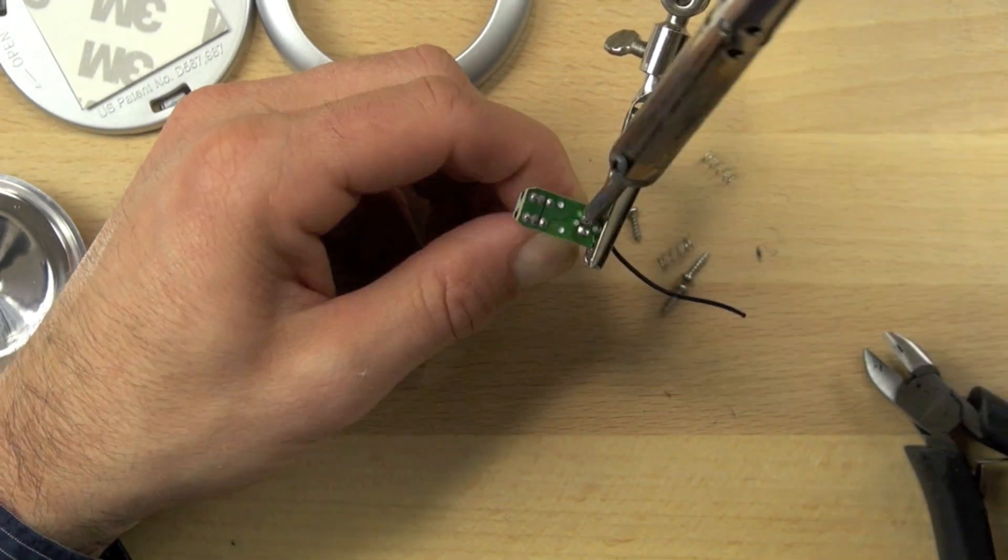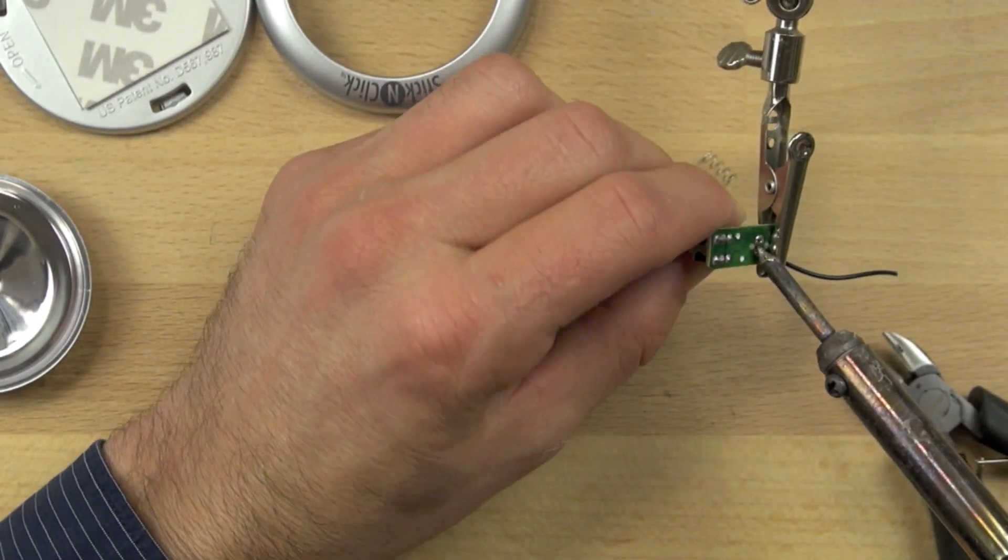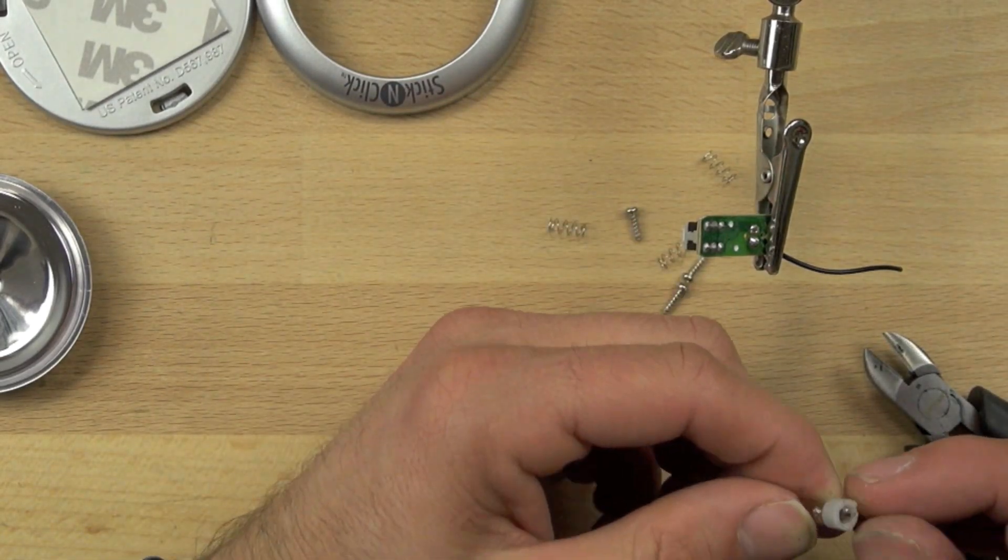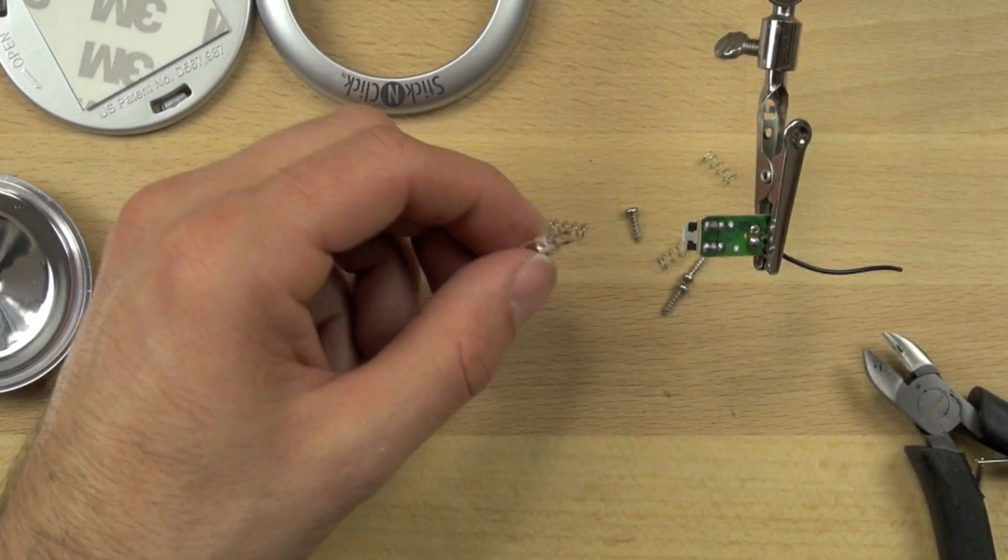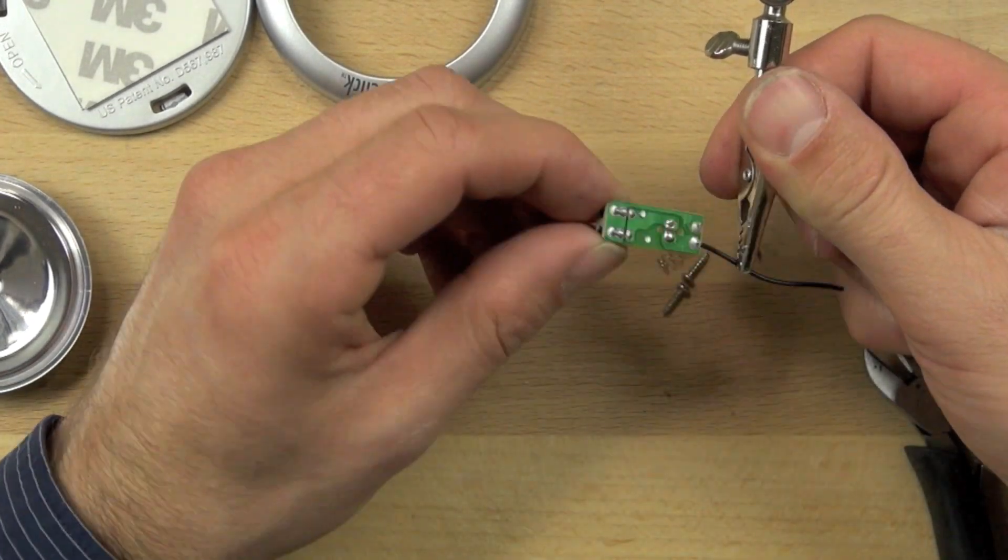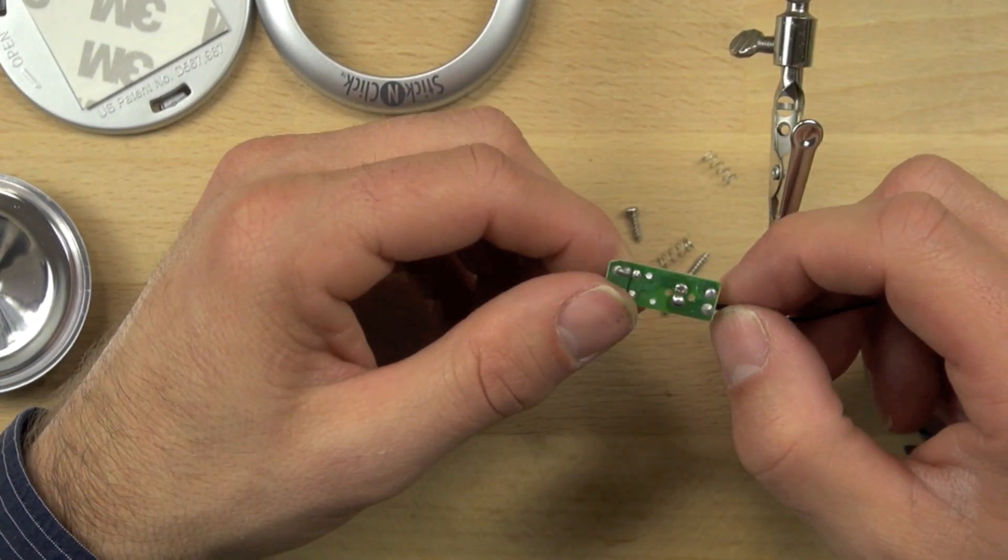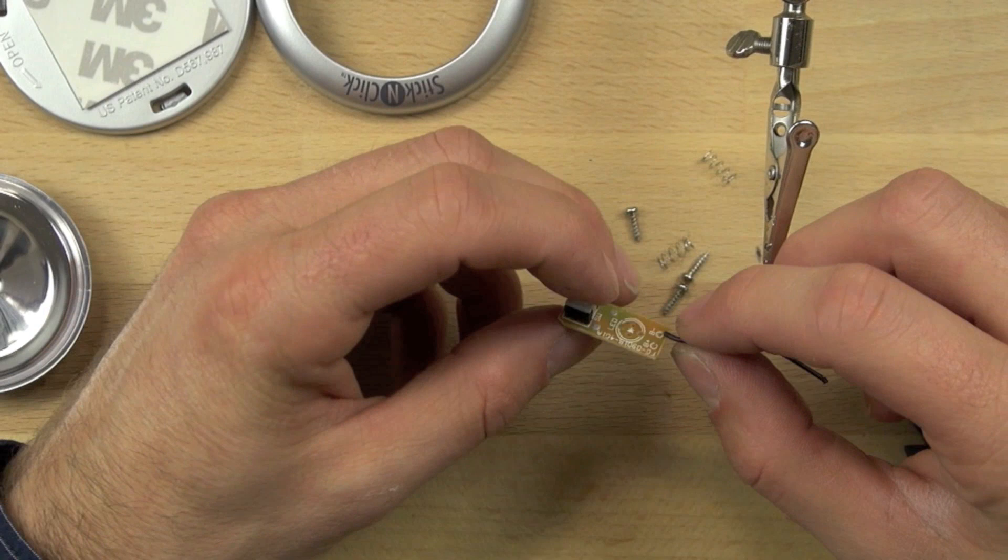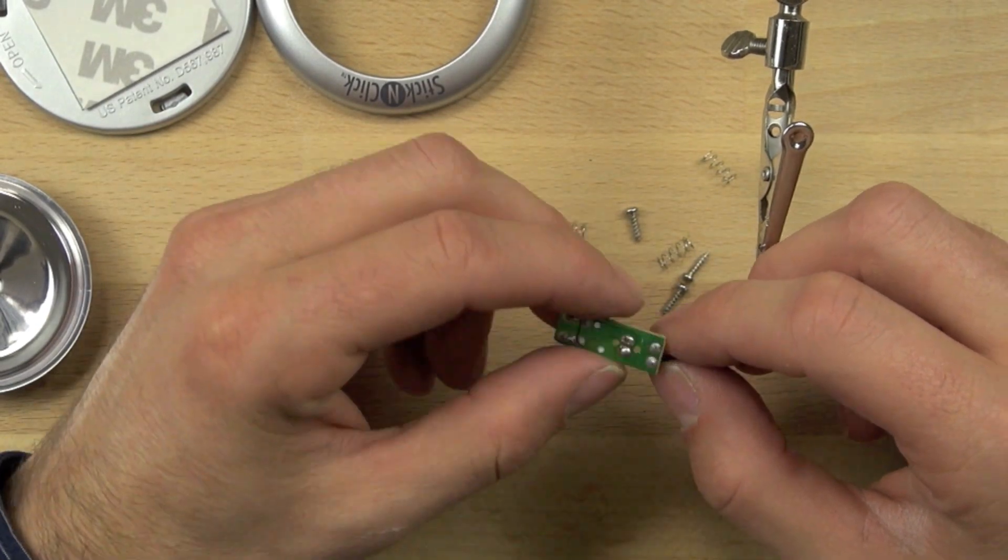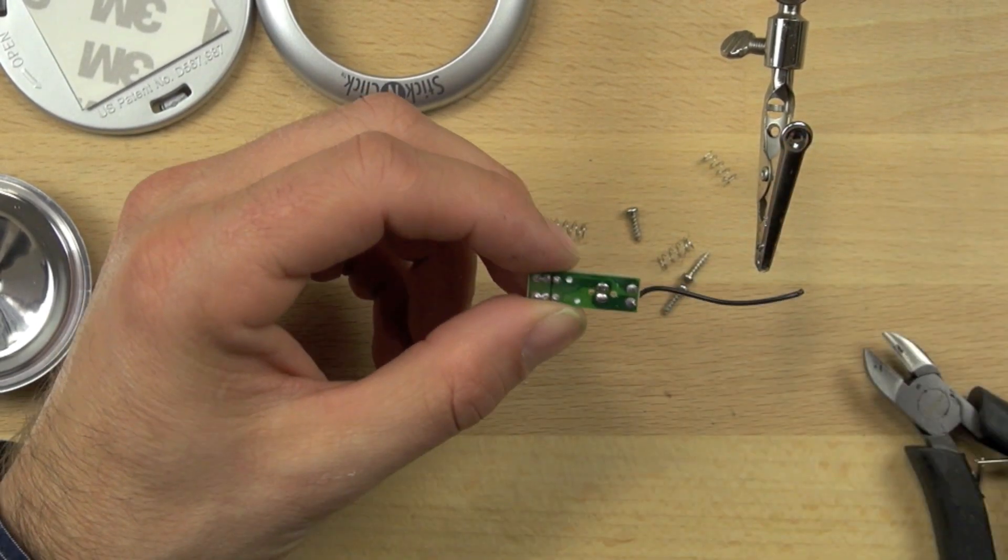So the first thing we're going to do is remove the LED. Let's just desolder that. We'll heat up those contacts on the back and pull the LED off. If you don't have a holder like this, you can have a friend hold the board with the pliers while you desolder it. But you want to be kind of careful because it's a small board. And you want to keep that hot soldering iron away from your fingers, of course.